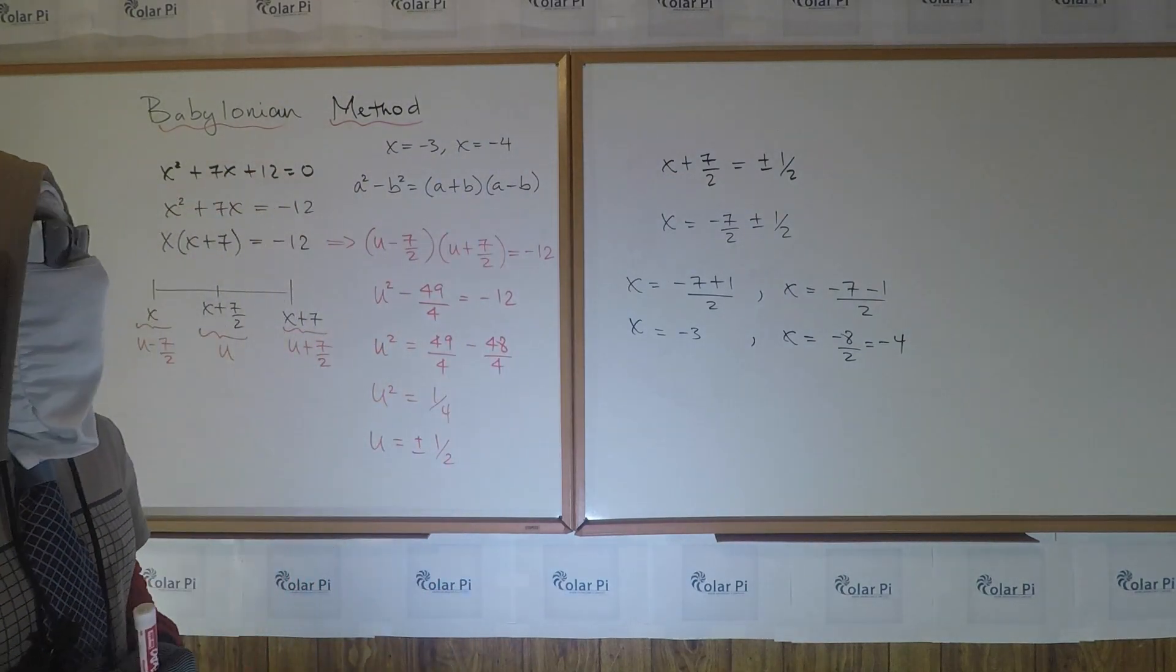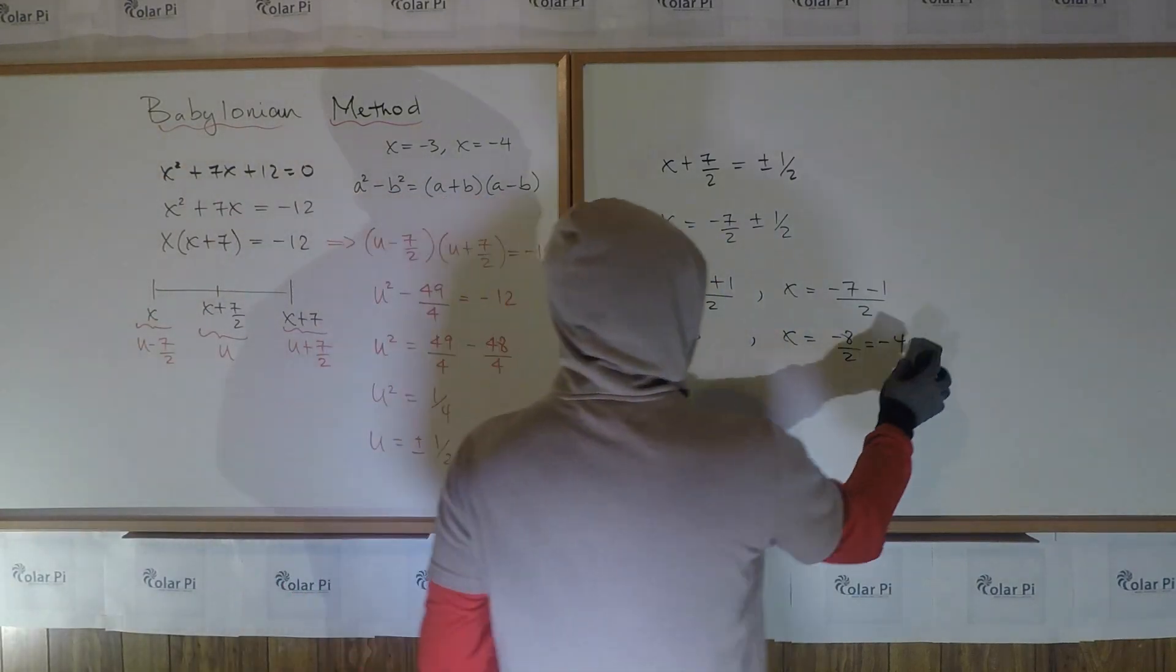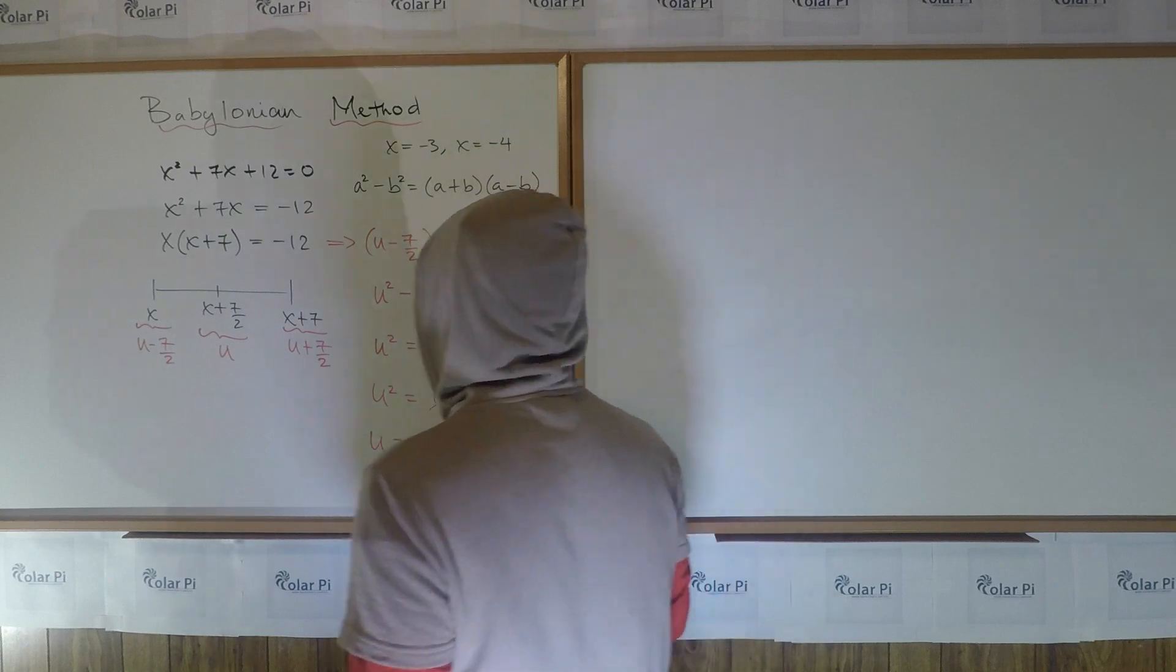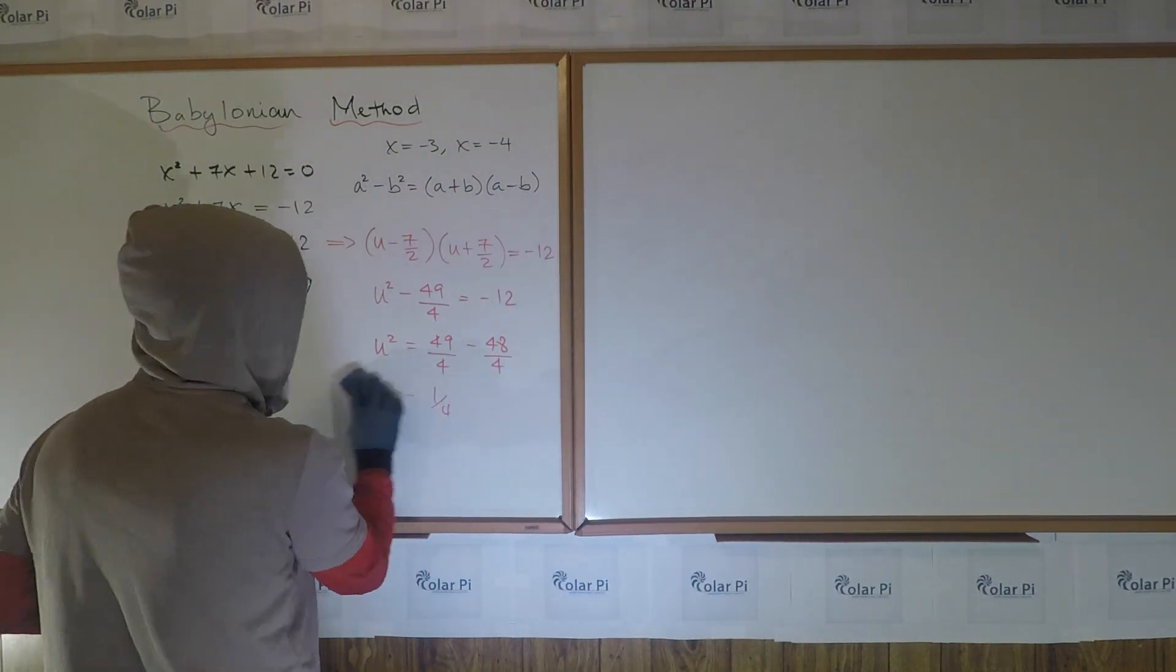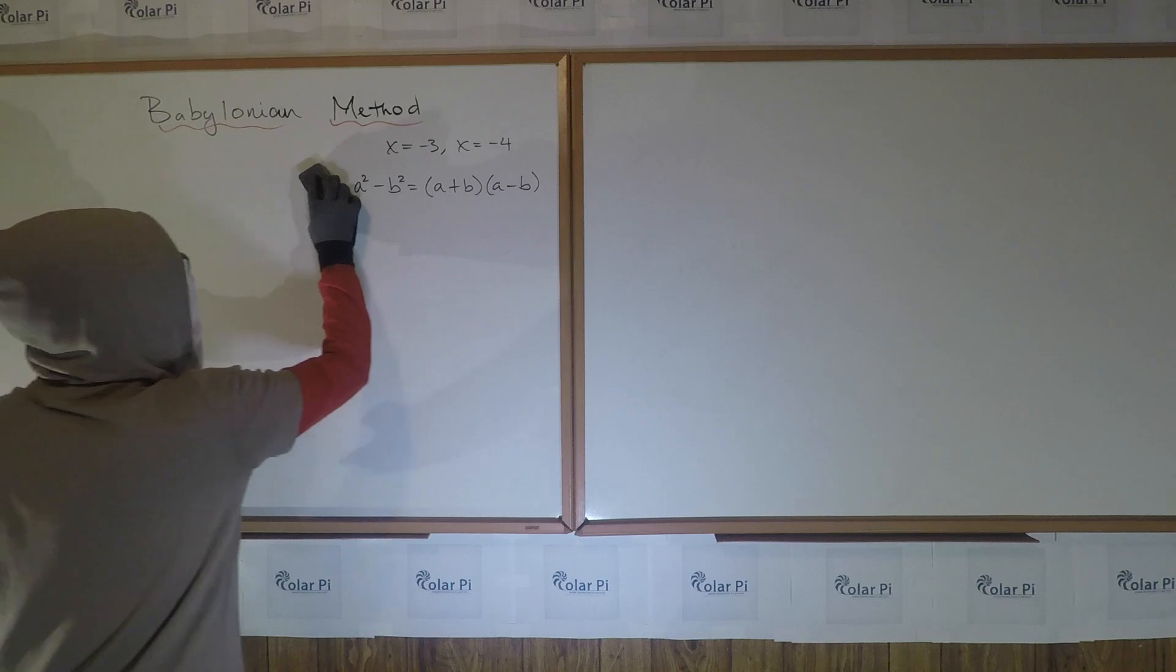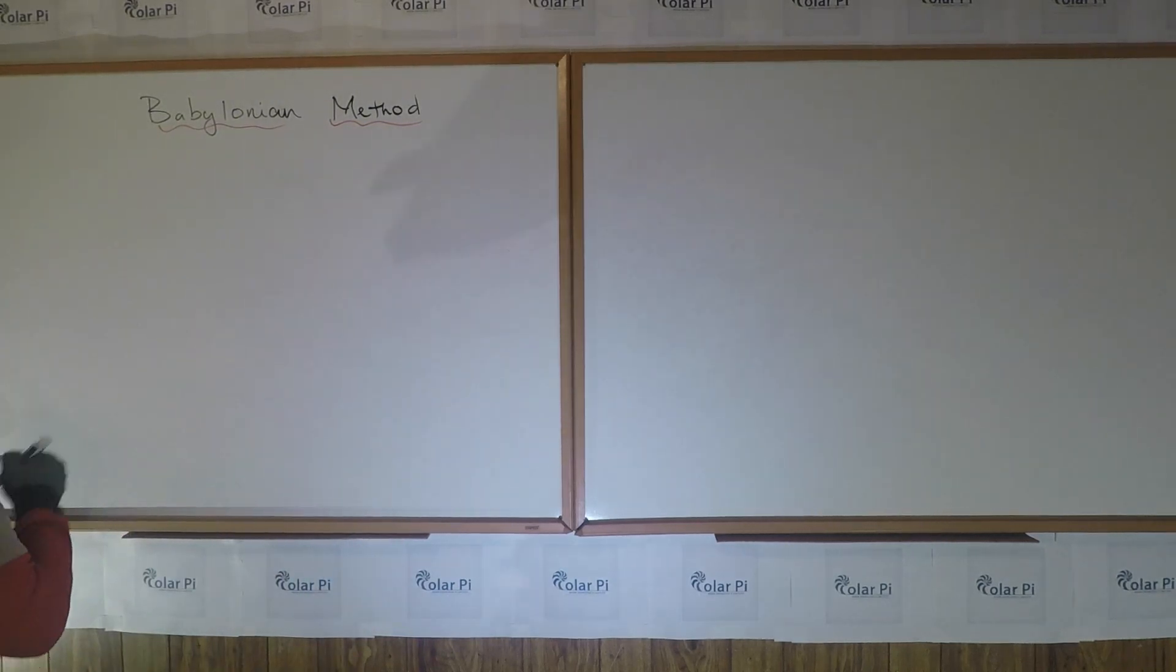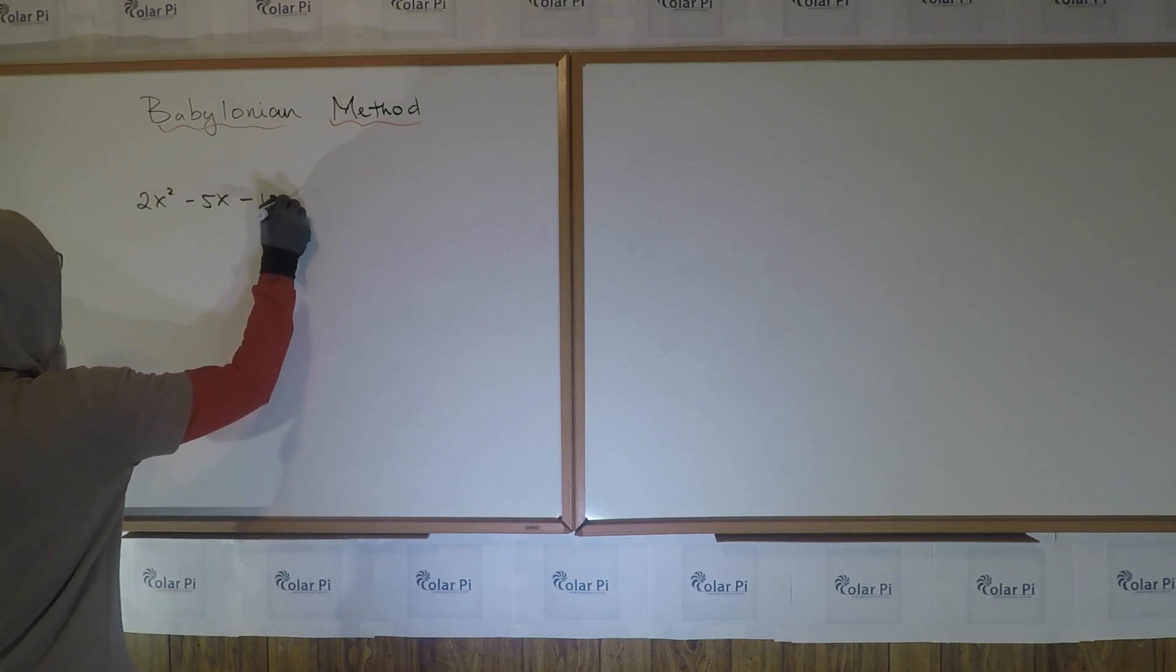Obviously, this is longer, so you don't want to do this for a simple quadratic like that. But it's a good way to demonstrate the Babylonian method. Okay, next, let's do a harder example. Like I said, the Babylonian method works on all quadratics. So, what quadratic should we look at next? How about this one? 2x² - 5x - 12 = 0.